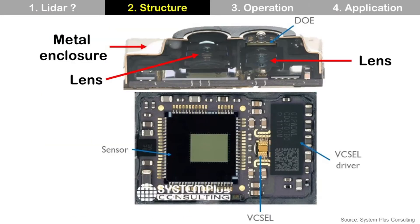This is a cross-section of LiDAR. At the right side, there are pixel, lens, and DOE. At the left, there are sensor and lens.